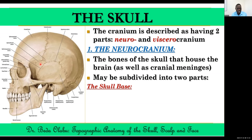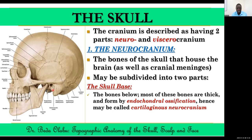The second part of the neurocranium is the skull base, which is largely the lower zone of the neurocranium. The bones of the skull base tend to be thicker than those of the membranous neurocranium, and most of them form from endochondral ossification — meaning a cartilage model is formed first and then replaced by bone tissue. For this reason, the bones of the skull base are termed the cartilaginous neurocranium, while the calvaria is the membranous neurocranium.